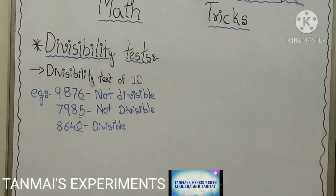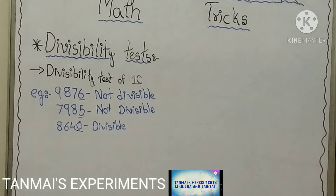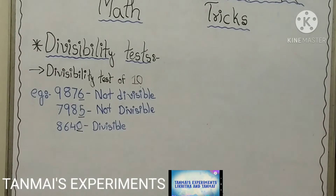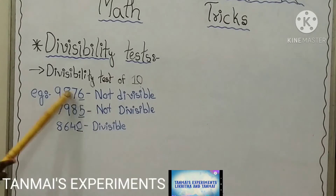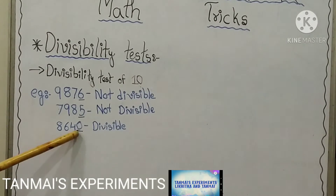Next, the divisibility test of 10 is also very easy. For the given number, if the last digit is 0, then the entire number will be divisible by 10. For example, 9,876 has last digit 6, hence it is not divisible by 10. In 7,985, the last digit is 5, hence it is not divisible by 10. In 8,640, the last digit is 0, hence the entire number 8,640 is divisible by 10.